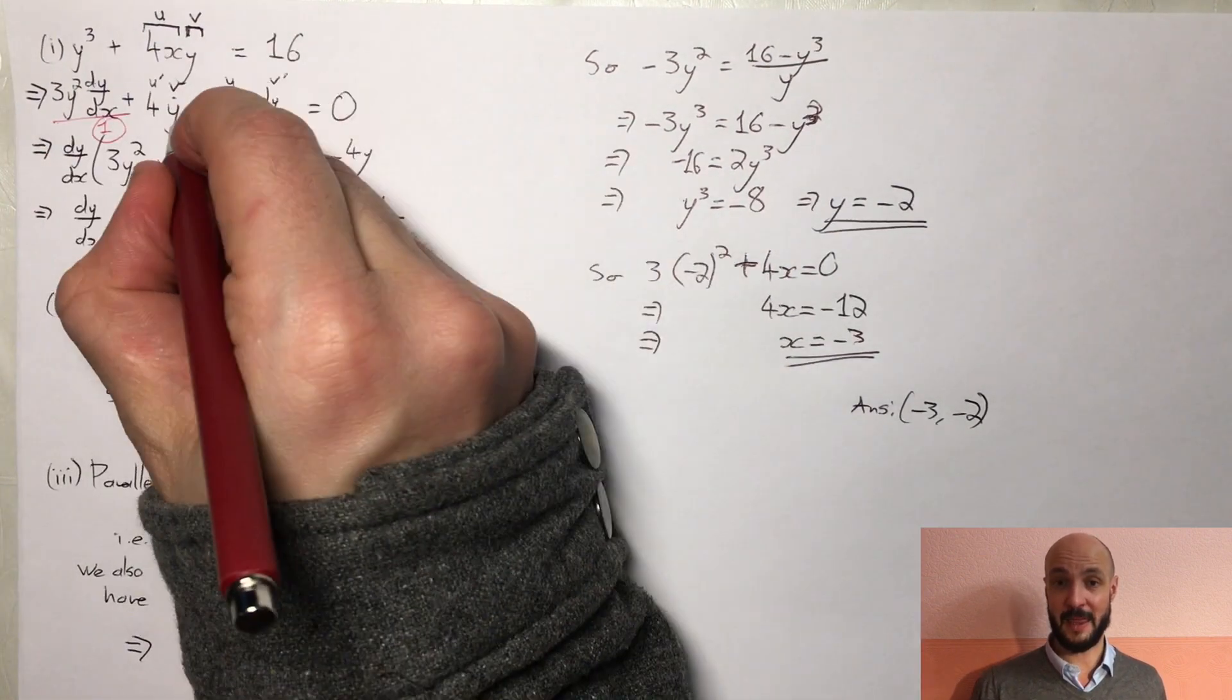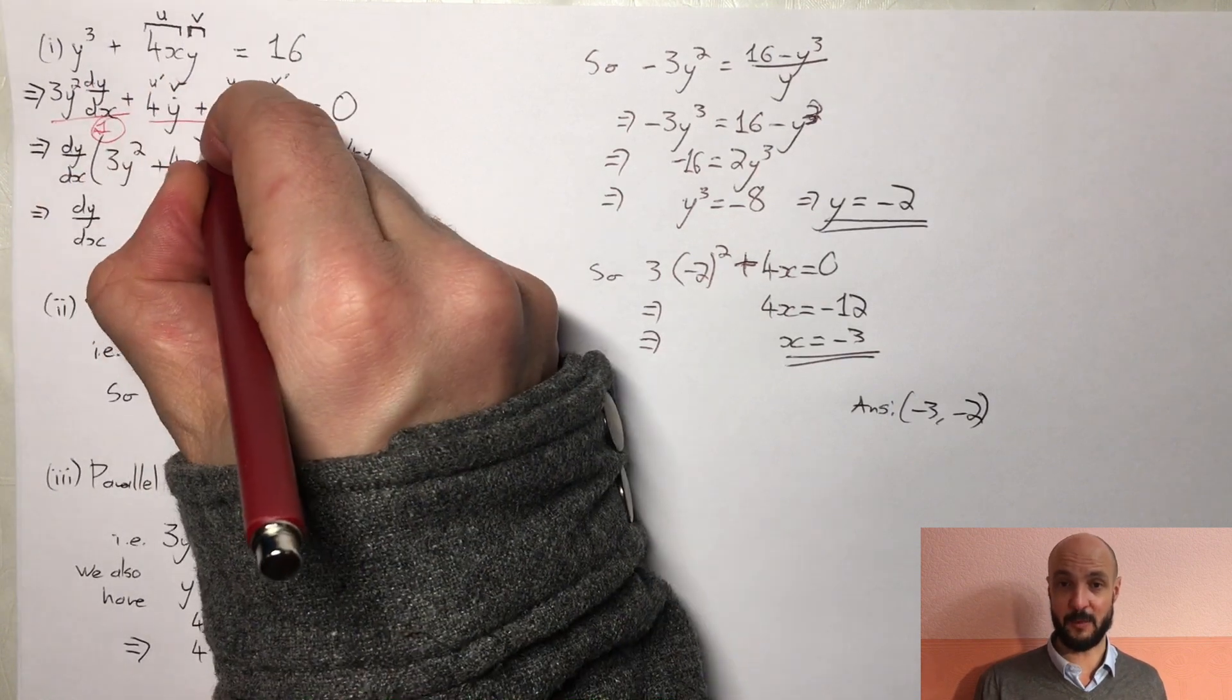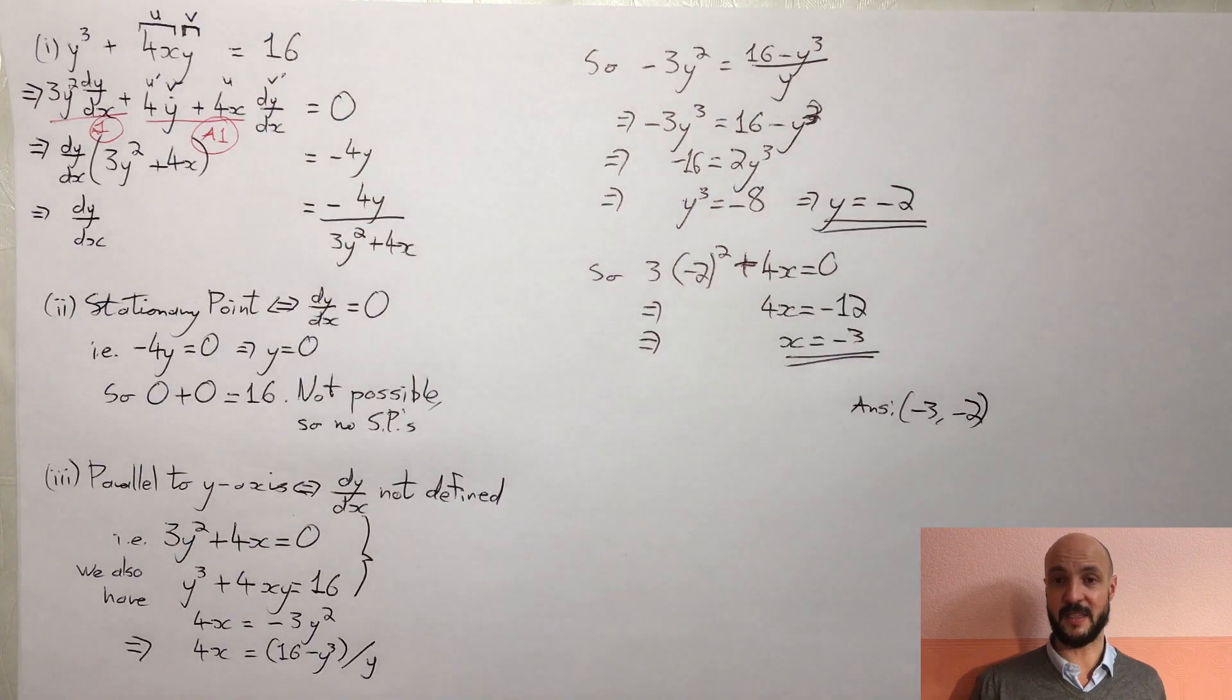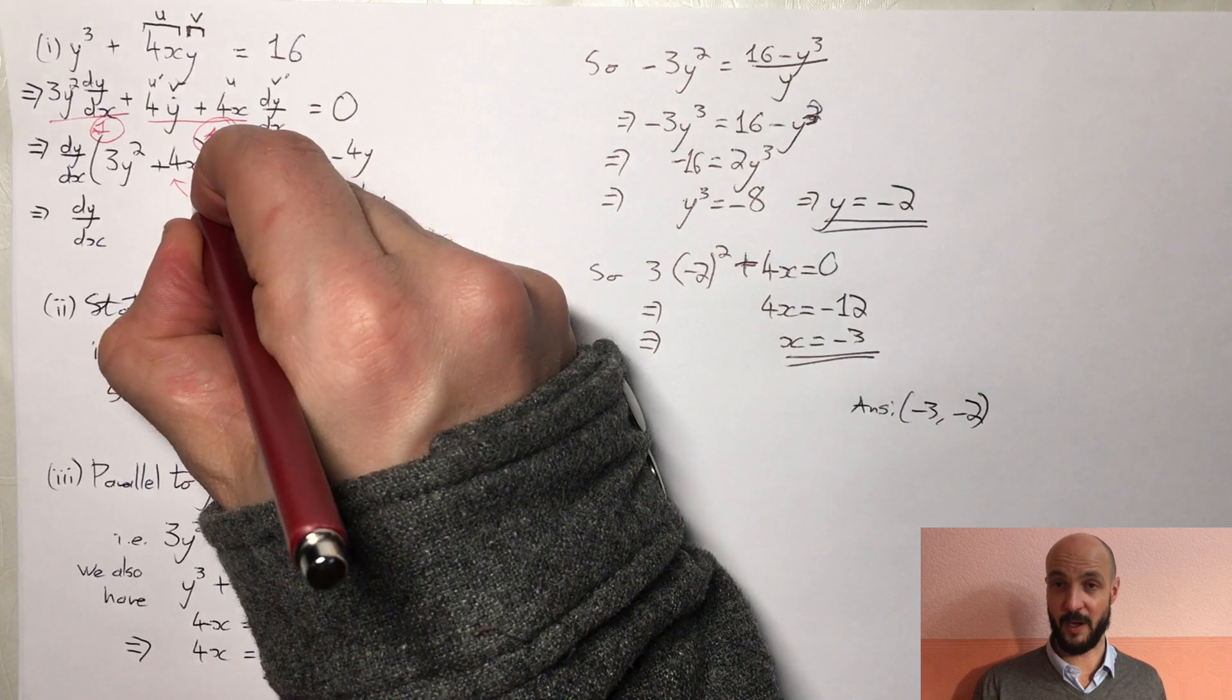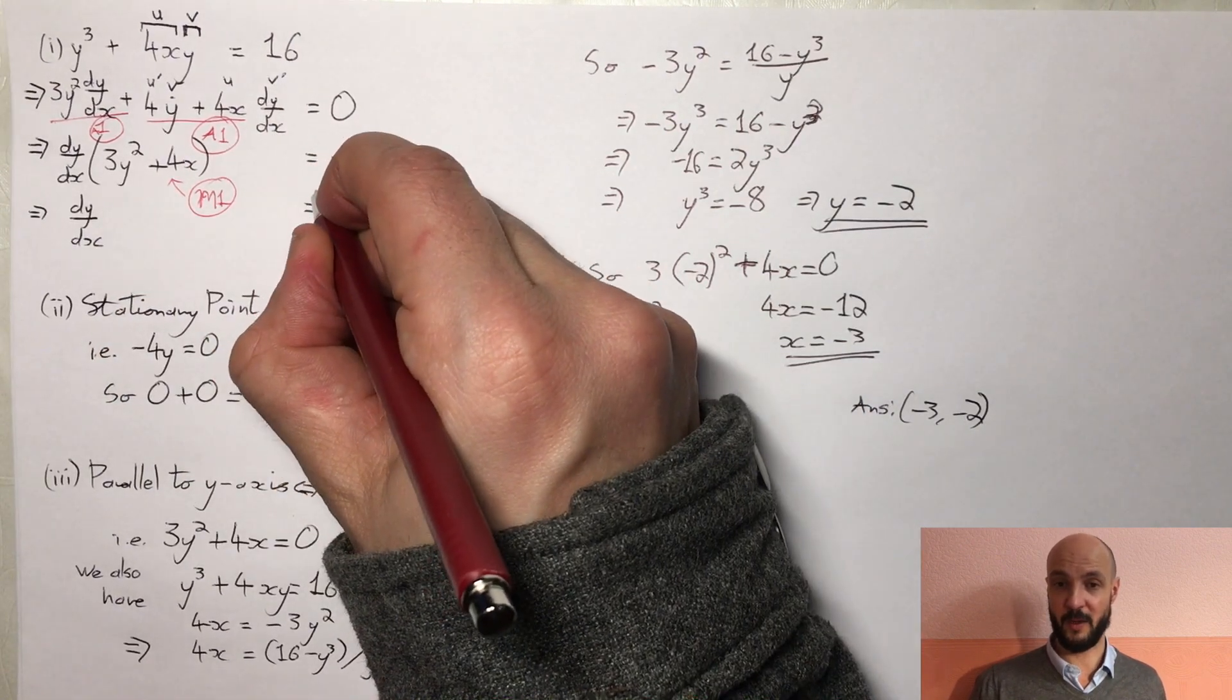We got a method mark for gathering the dy/dx terms together, and a final accuracy mark for showing the equality with the final statement minus 4y over 3y squared plus 4x.